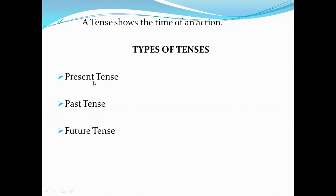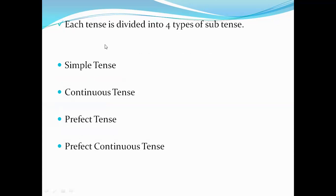Tenses are divided into three types: present tense, past tense, and future tense. Each tense is further divided into four subtypes: simple tense, continuous tense, perfect tense, and perfect continuous tense.